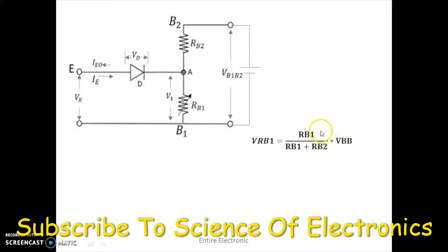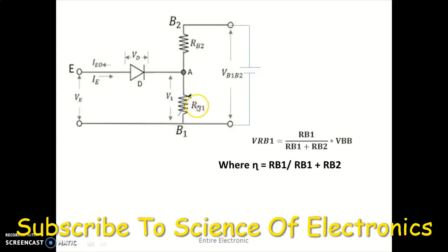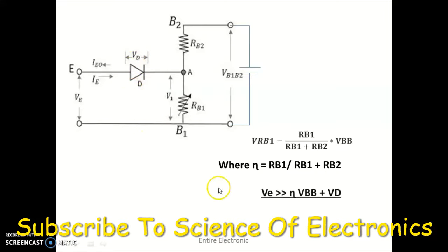The term RB1 / (RB1 + RB2) is also called eta, that is, the intrinsic standoff ratio. To turn the transistor on, we must overcome this voltage VRB1, which is eta × VBB, plus the P-N junction diode voltage VD of 0.7 volts. So the emitter voltage VE must be greater than (eta × VBB + VD).